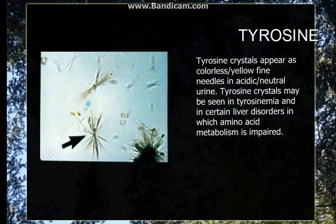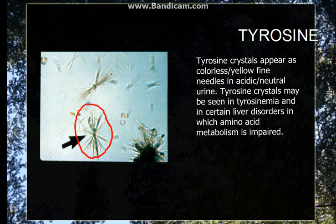Now going to tyrosine crystals. They have a typical shape — fine needles. They are present in acidic urine, like the other crystals discussed so far. They are seen in cases of tyrosinemia, in which tyrosine metabolism defects are present.